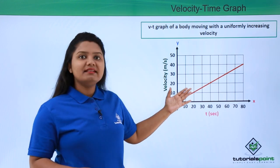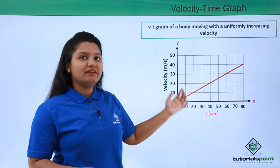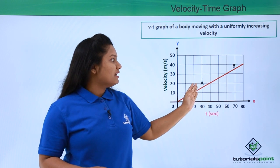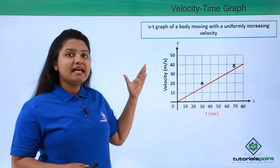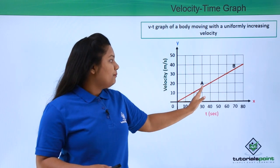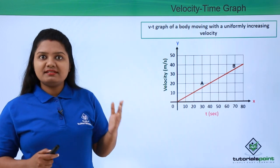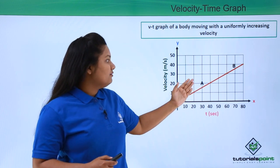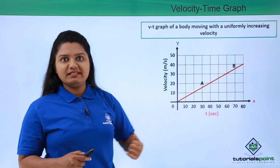Now suppose we want to find the acceleration of this body whose velocity time graph is given to us. For that, let us consider two points A and B. We want to find what is the acceleration of the body from point A to point B. To do that, the first step is to find the value of velocity and time at these two points.